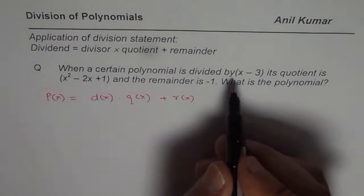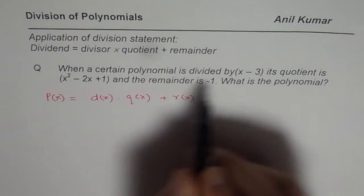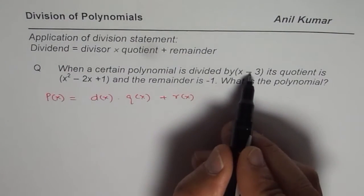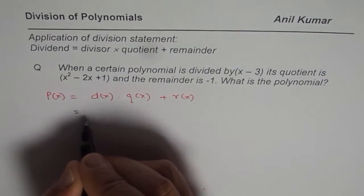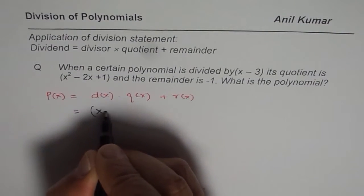So we have the divisor as x minus 3. When you say polynomial is divided by, that becomes the divisor. So we could write this as divisor is x minus 3.